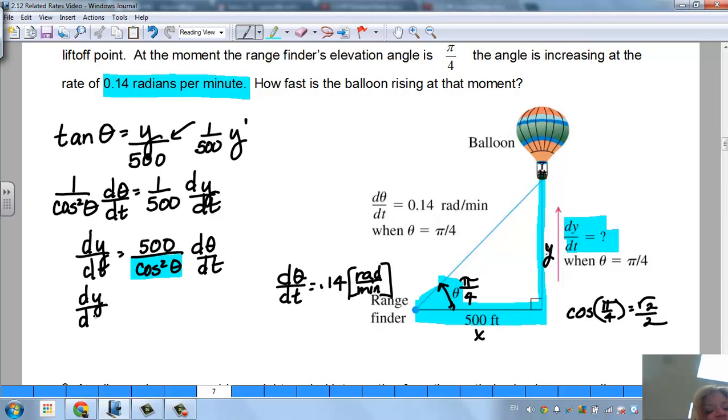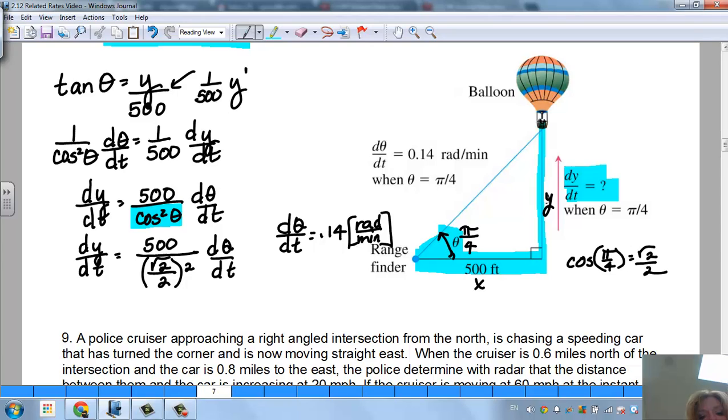So I have dy/dt is 500, and it's going to be divided by √2/2, and we're squaring that, dθ/dt. So now, I know that this, if I square √2, that's going to be 2 over 4, or 1/2, and then I'm going to multiply it by the 500. I end up doing dy/dt, and in this spot right here, how about we put in what dθ/dt is? We know right here, it's times 0.14, so when I multiply that all out, I'm going to get 140 feet per minute. And you can go through and check my math if you want, but basically you're squaring this, taking 500, divided by that, and multiplying by 0.14. So that's how fast that balloon is rising.